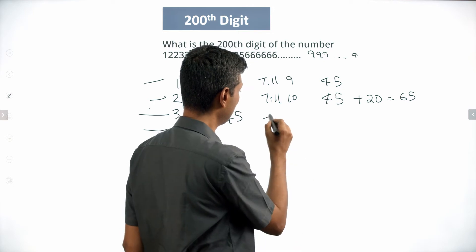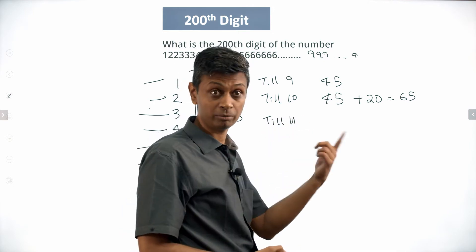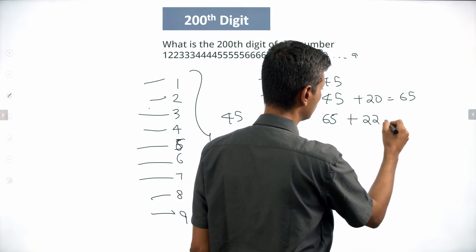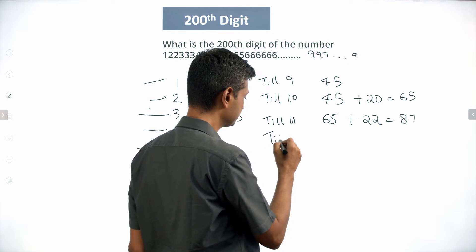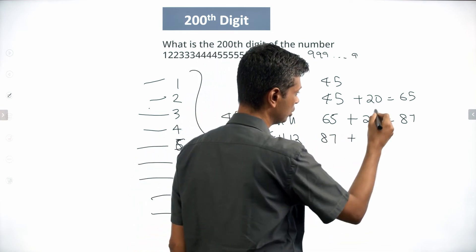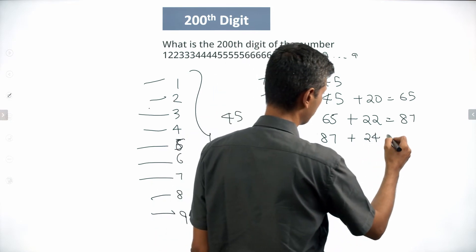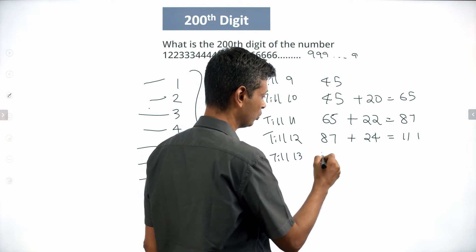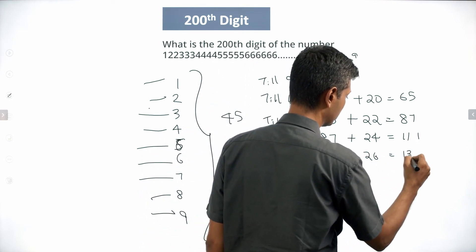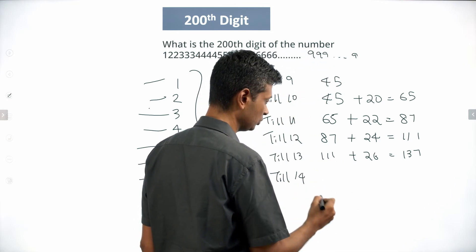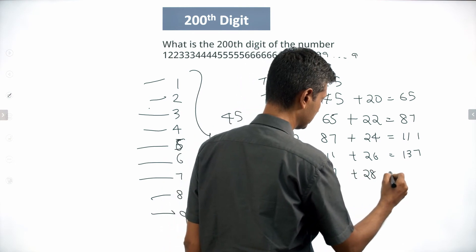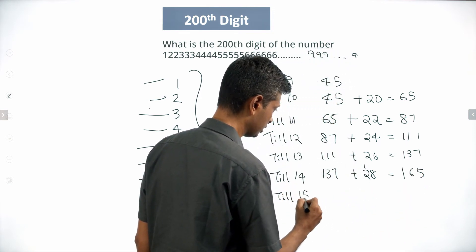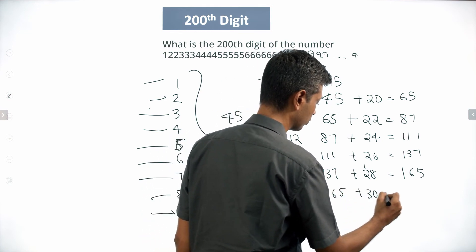After this, it is very simple. Till 11, 11 will appear 11 times. So we are at 65, plus 11 times 2 which is 22, which takes us to 87. Till 12: 87 plus 24 — 12 gets repeated 12 times — takes us to 111. Till 13: 111 plus 26, which is 137. Till 14: 137 plus 28, which is 165.